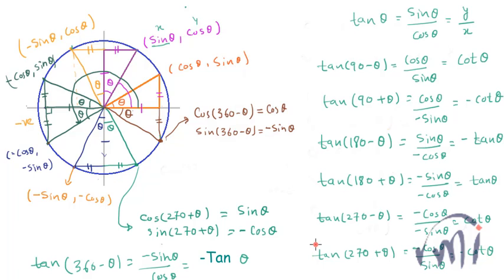So this is how different trigonometric ratios behave differently in different quadrants. In the next video I will explain how to remember this transition from tan to cot, cot to tan, sin to cos, cos to sin, sec to cosec, and cosec to sec in a very easy manner.